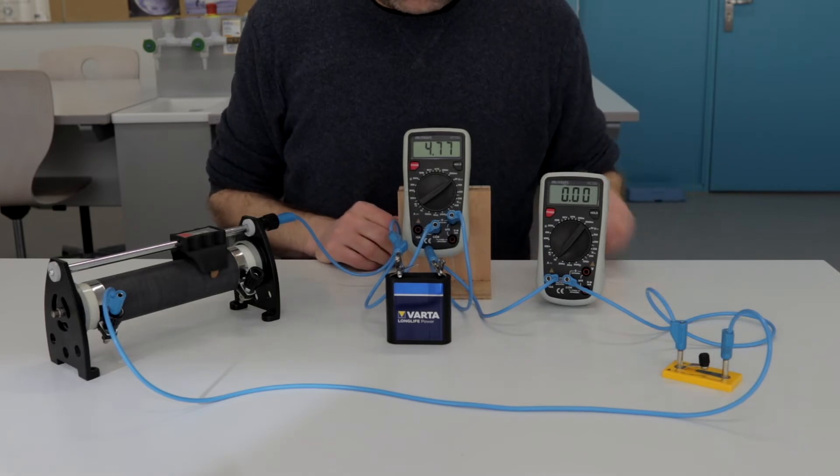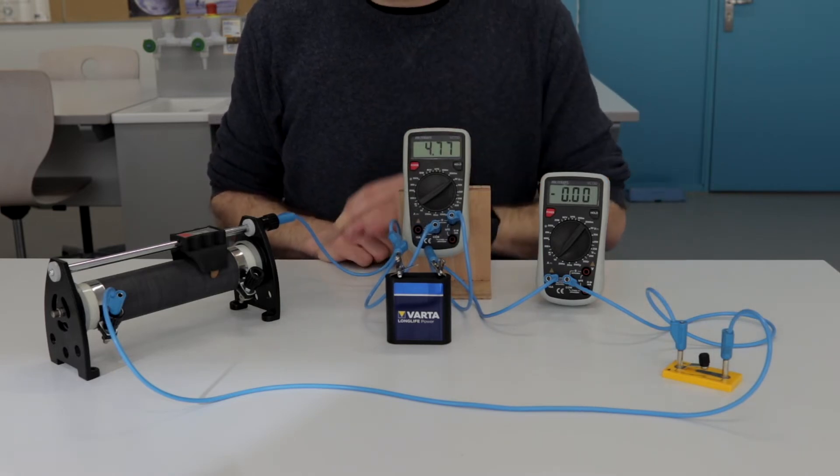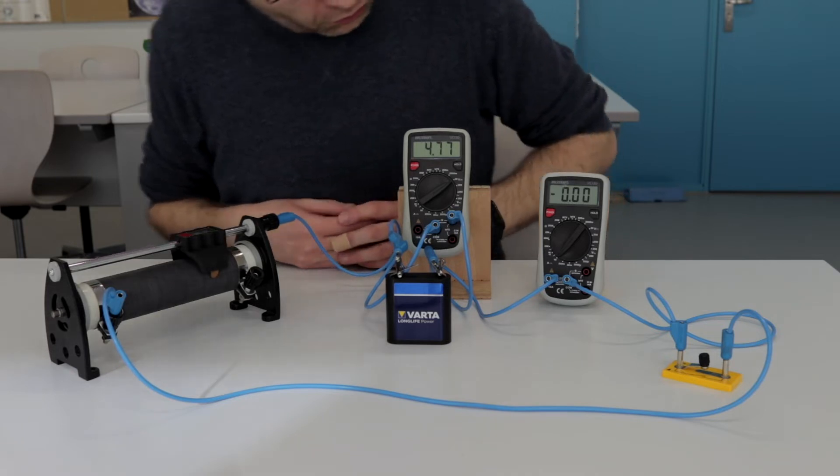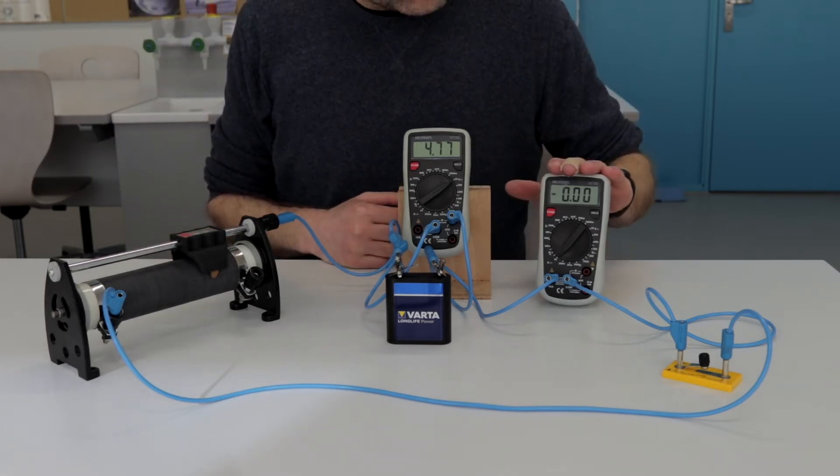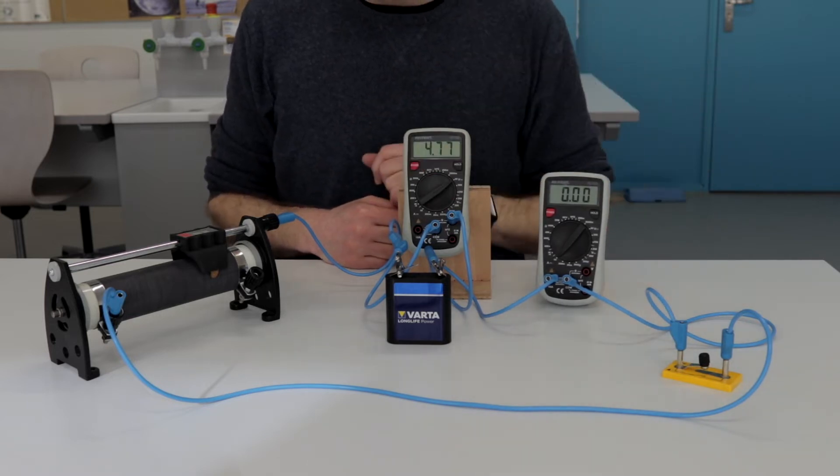Right now the switch is open, so the voltmeter is connected directly to the terminals of this battery, and the reading is 4.77 volts. There is no reading on the ammeter since there is no current flowing in the circuit.